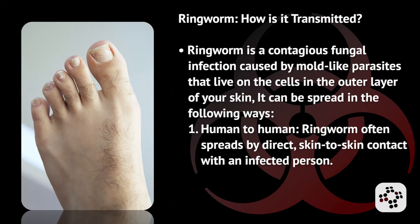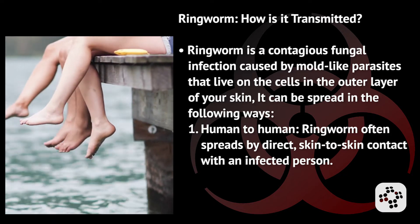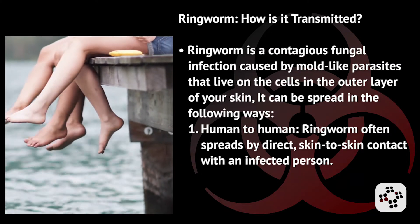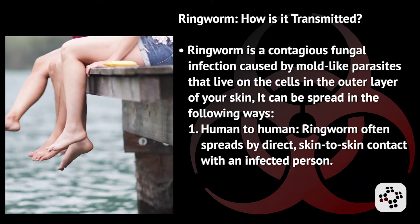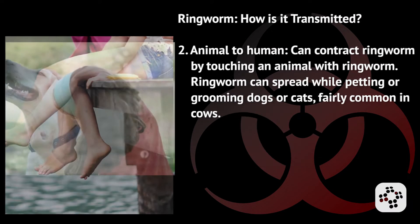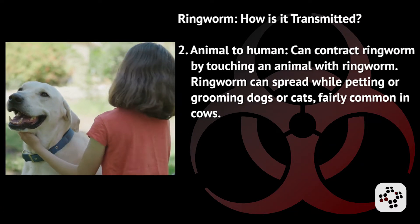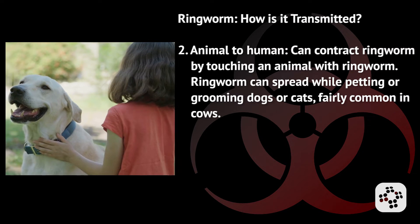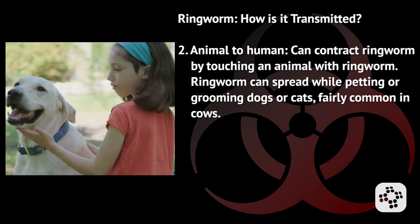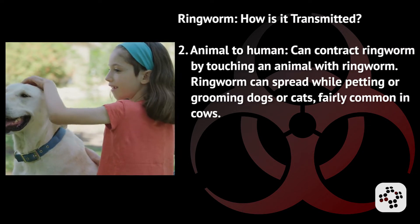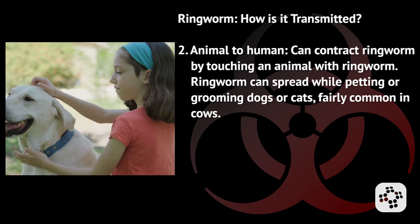Ringworm is a contagious fungal infection caused by mold-like parasites that live on the cells in the outer layer of your skin. It can be spread in the following ways. Human-to-human: ringworm often spreads by direct skin-to-skin contact with an infected person. Animal-to-human: you can contract ringworm by touching an animal with ringworm, such as when petting or grooming dogs or cats.